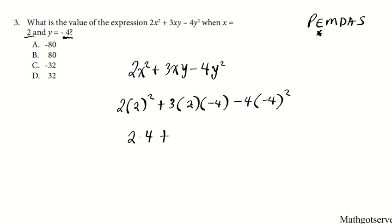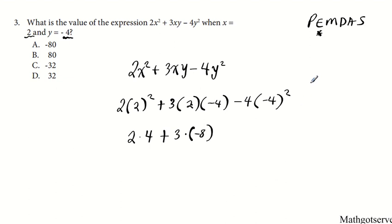When you're multiplying multiple terms you have to do two at a time, so 2 times negative 4 is negative 8. Be careful: anytime you square a negative, the result is positive. There's a trick for remembering how to multiply signs — anytime the signs are the same, you always have a plus; if the signs are different, you have a minus. You can also use a peace sign approach: minus, minus gives plus.